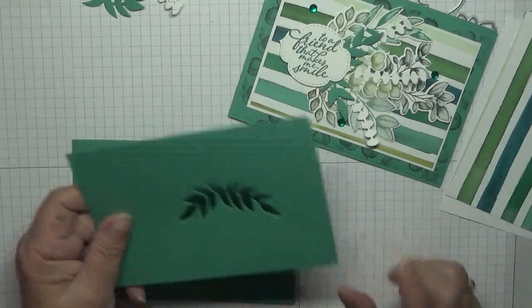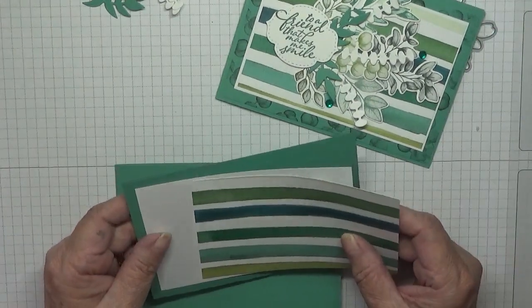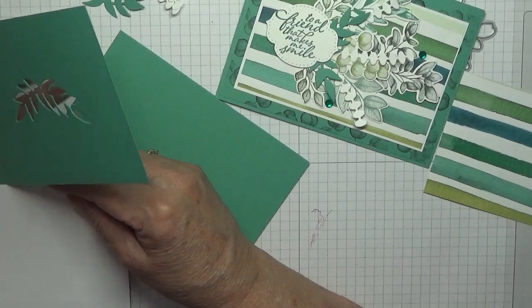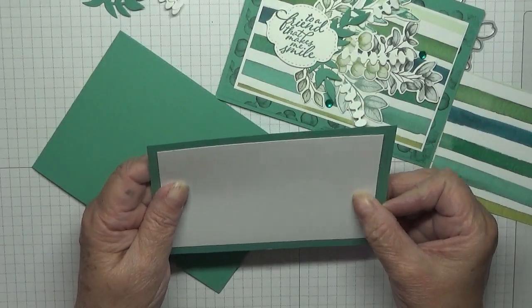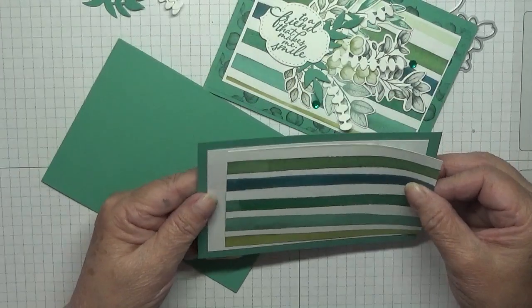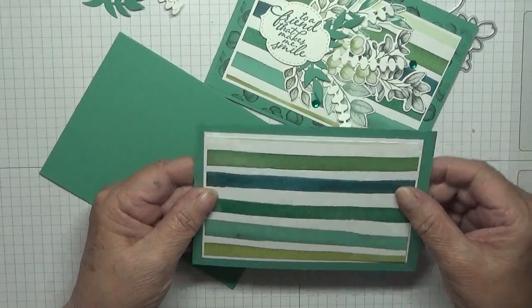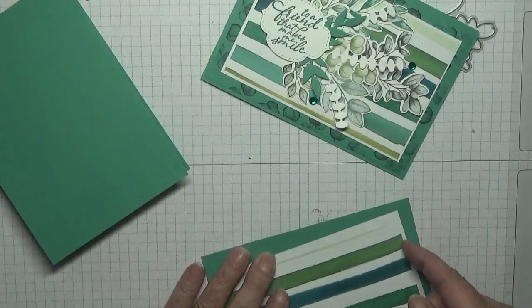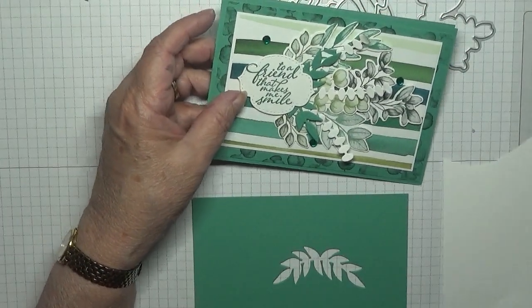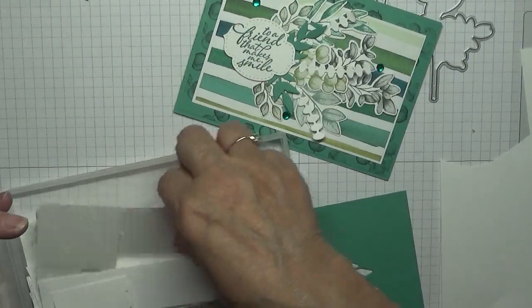I have got a piece of Just Jade at 5 and 5/8 by 3 and 7/8, a piece of white at 5 by 3 and 1/2 which will go over the top there, and I have a piece of the Fern DSP at 4 and 7/8 by 3 and 3/8. That will go like that, so no, don't want to do that yet. We're going to do our stamping. We want lots of scraps so we can stamp our leaves out.